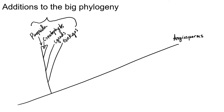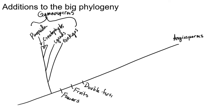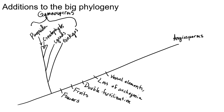Those are our gymnosperms — ginkgos and others — and they are a sister group to the angiosperms. Our big separating characteristics here are flowers, fruits, double fertilization, loss of archegonia, vessel elements, sieve tube elements, and companion cells.